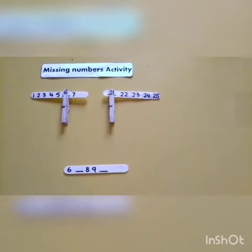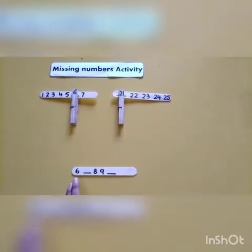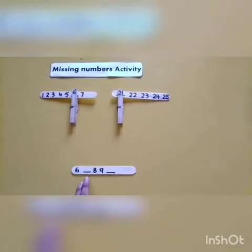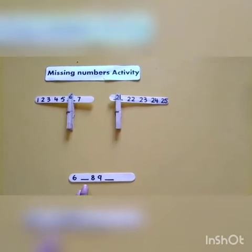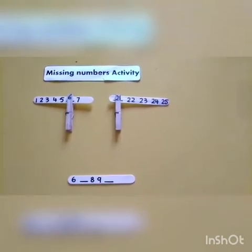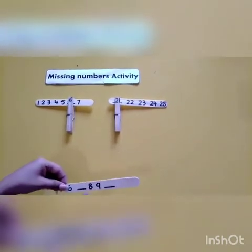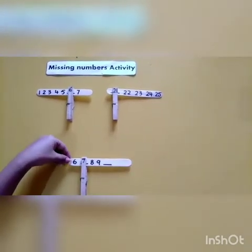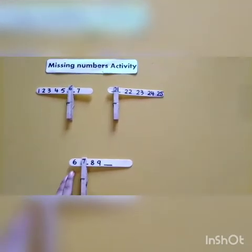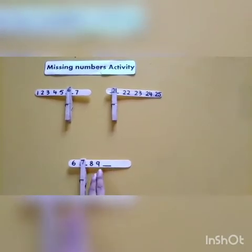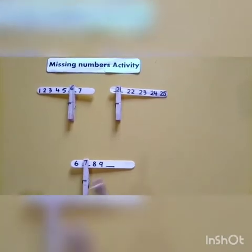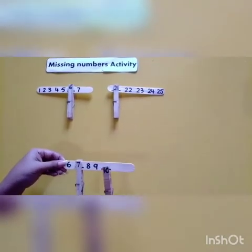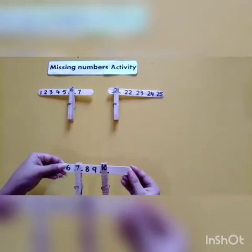There are two numbers missing now. Let's count which number is missed. Six — what comes after six? The missing number is seven! Now I'm going to stick number seven. Now count with me: six, seven, eight, nine — oops! There is number ten missing. Here it is — number ten! Very good.